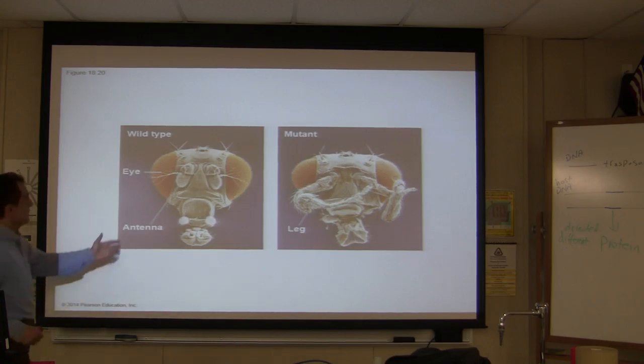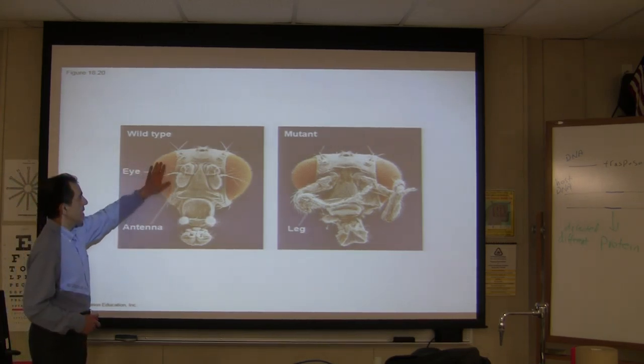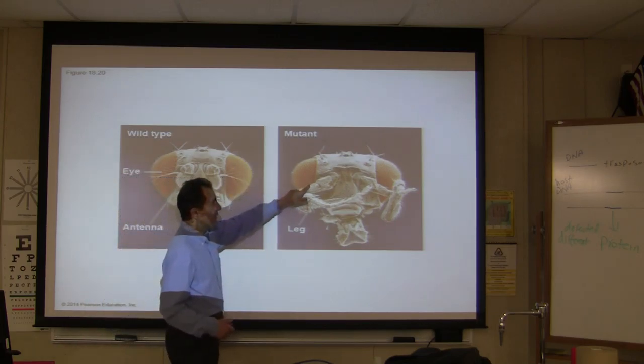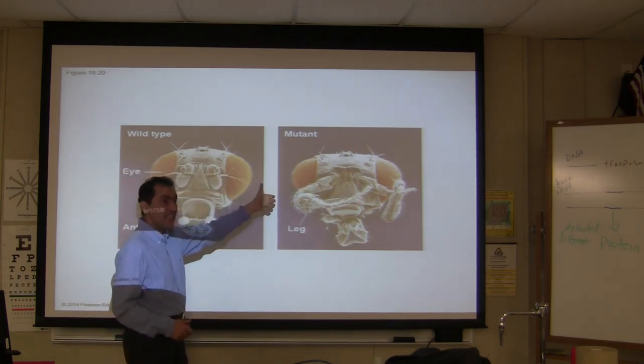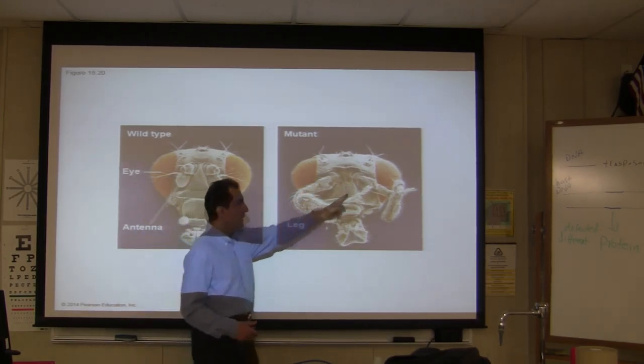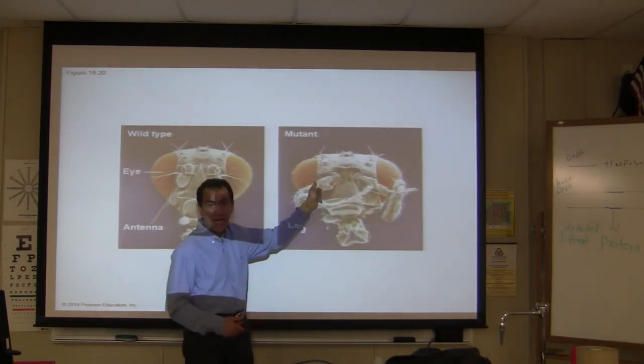Normally, this is what happens in normal wild type. You have an eye here, you have an eye here. This is a mutant one. They were able to mutate the dorsal filum, and you have the leg coming out of the eye.